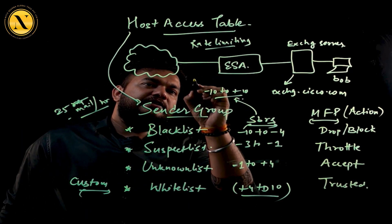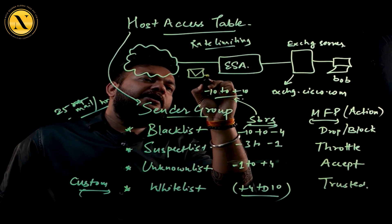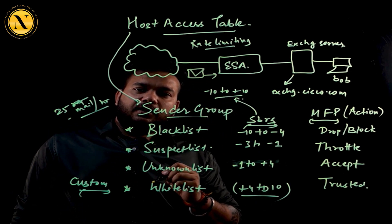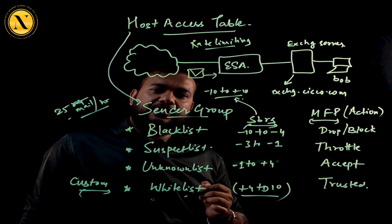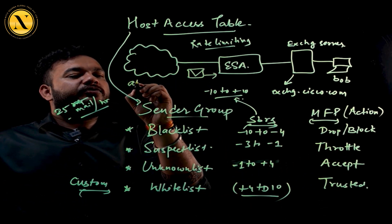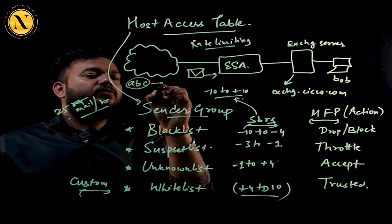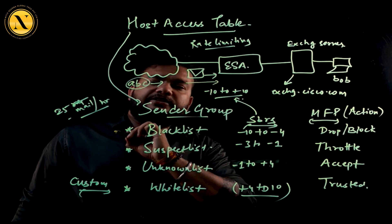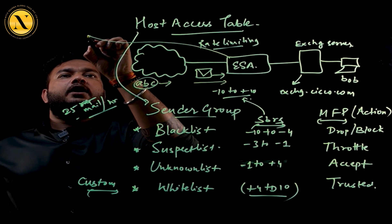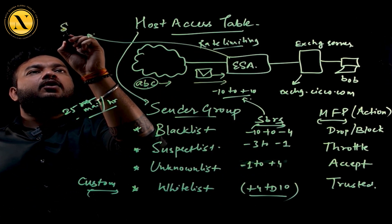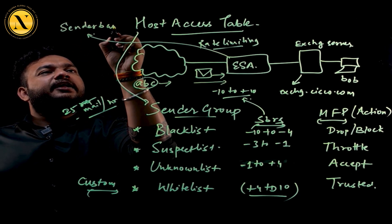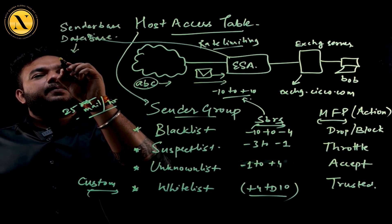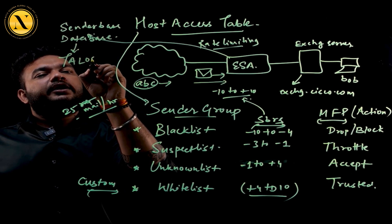The question is: when an email arrives at the organization, how does it get assigned to a particular sender group so the action can be taken? Let's say a random user ABC tries to send an email. The email is received by the Email Security Appliance, which then talks to something called the Sender Base database, handled by Talos.